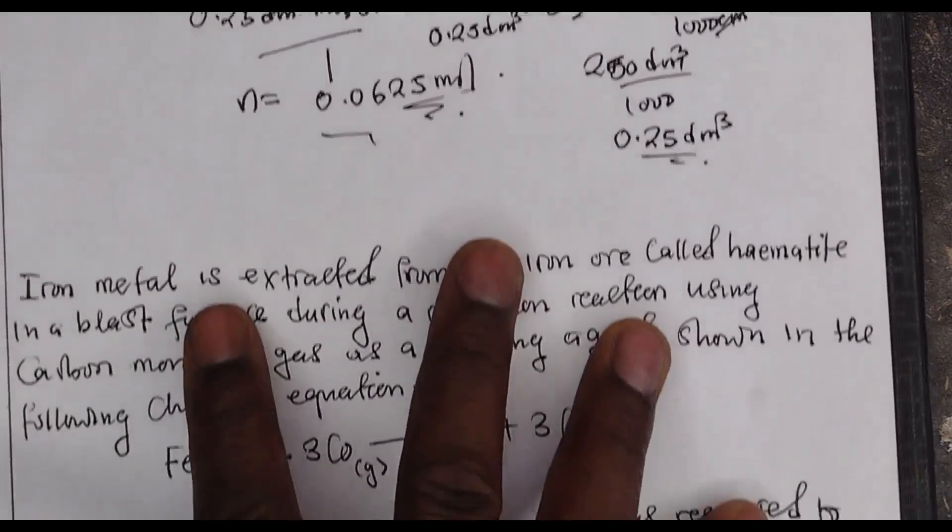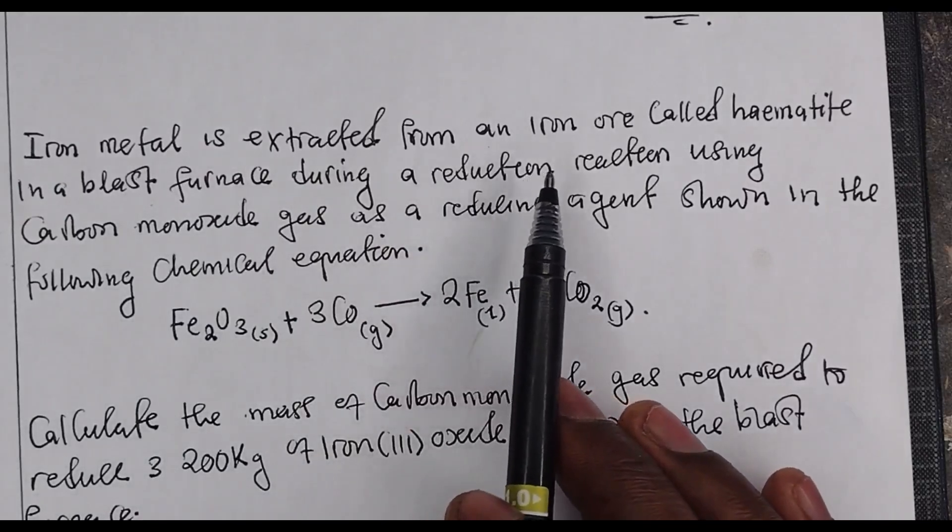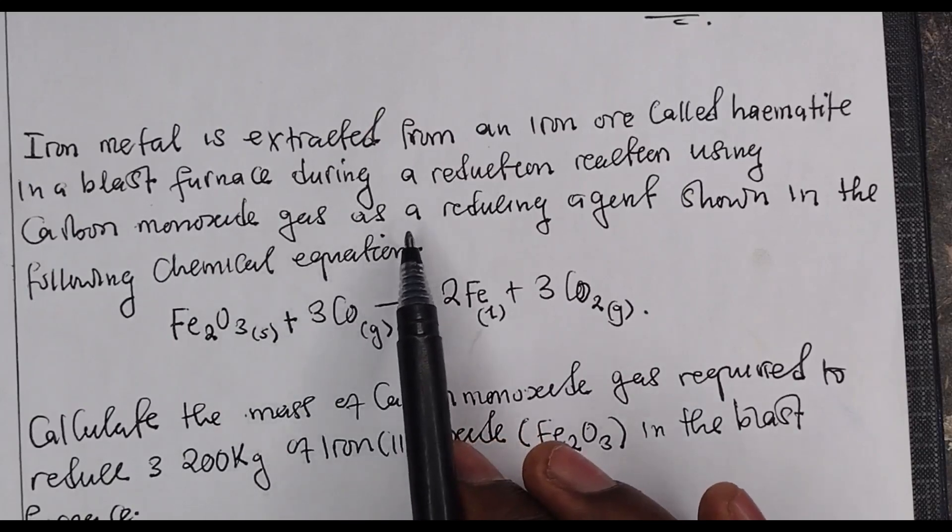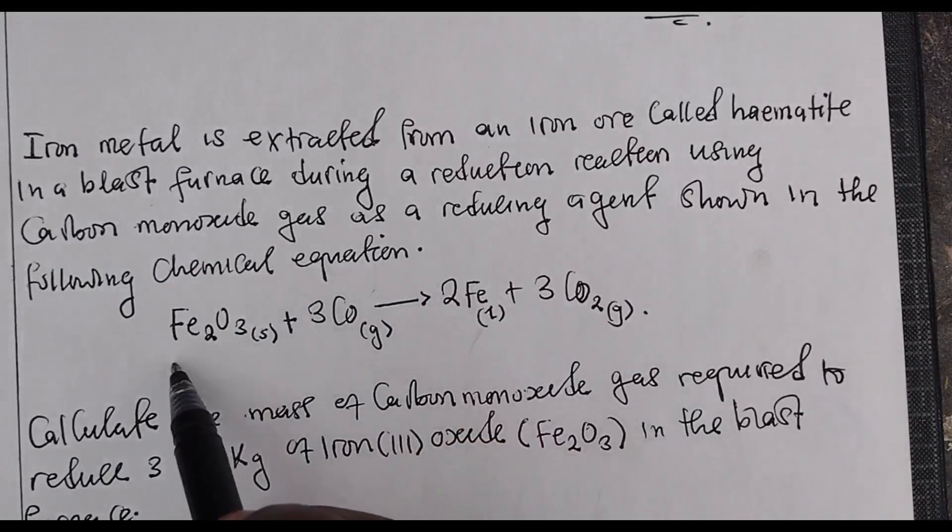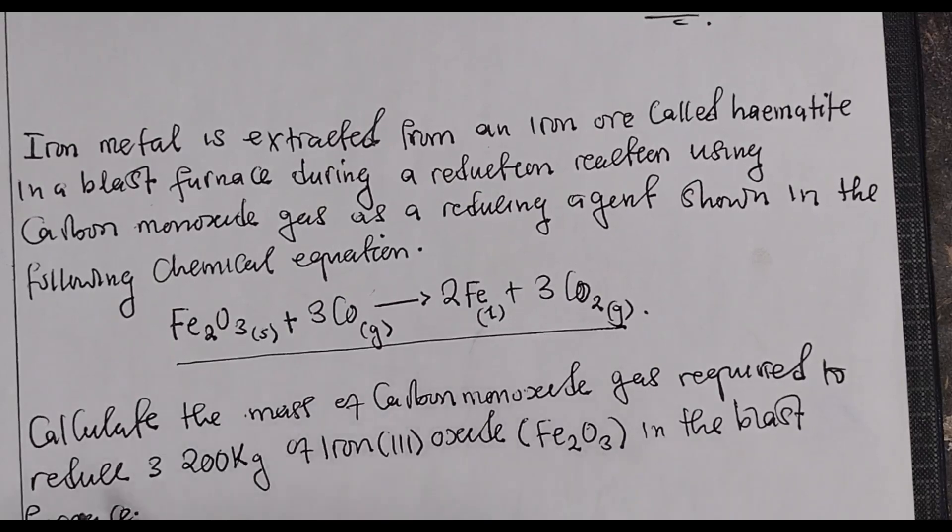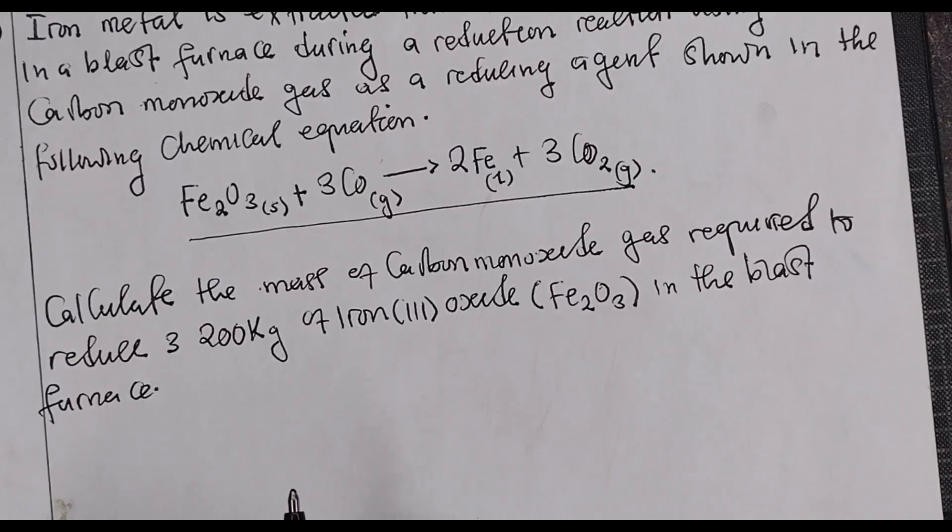The next question: Iron metal is extracted from an ore called hematite in a blast furnace during a reduction reaction using carbon monoxide gas as a reducing agent shown in the following chemical equation. The question is calculate the mass of carbon monoxide required to reduce 3200 kg of iron(III) oxide, which is hematite, in the blast furnace.